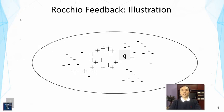The most effective method in the vector space model for feedback is called Rocchio feedback, which was actually proposed several decades ago. The idea is quite simple.